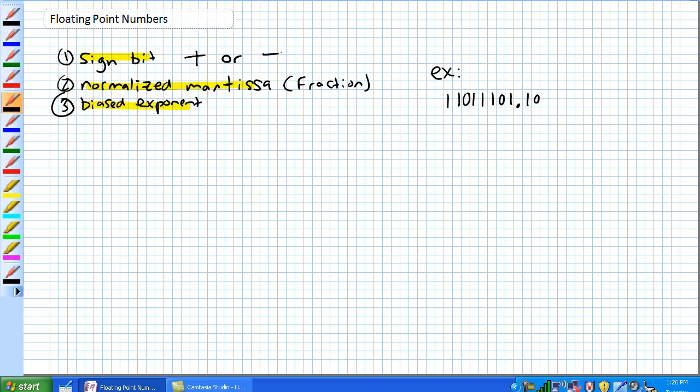Normalized means the decimal place is shifted. In our example right here, this decimal place, so it's 1101110.10. That's our number. A normalized mantissa means that the decimal place is shifted right there.